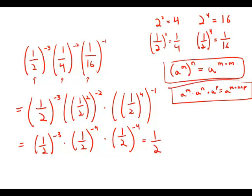So this should equal 1 half to the power of negative 3 plus negative 4 plus negative 4. Negative 3 plus negative 4 plus negative 4 is negative 11. So what we get is 1 half to the negative 11. And this is answer choice B.